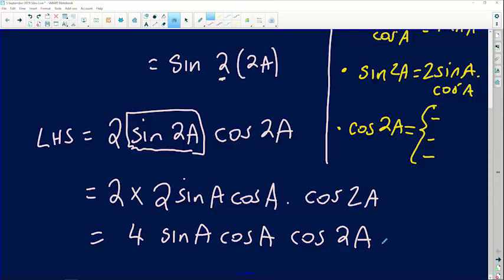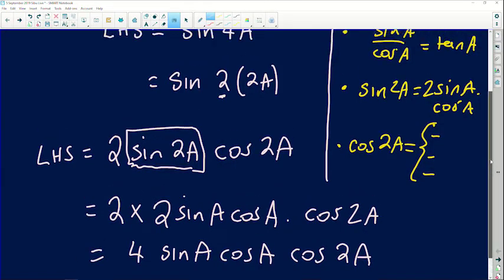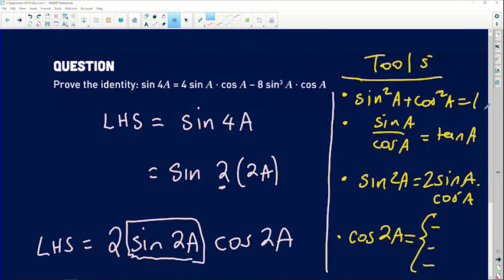If it's not working, definitely the third one is going to be the one that you have to work with. Now, let's go back at the top and check what we are trying to prove here. We are trying to prove that the left-hand side is basically equal to 4 sin A cos A minus 8 sin cubed A.